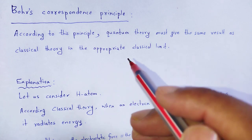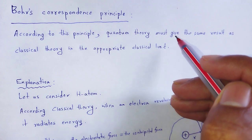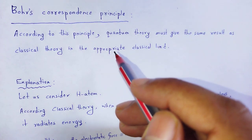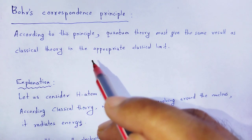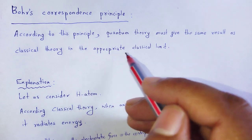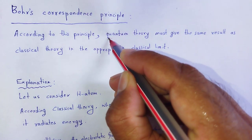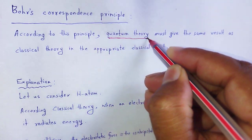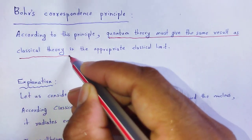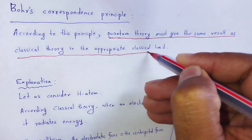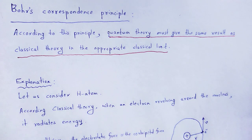According to this principle, quantum theory must give the same result as classical theory, but the condition is that the appropriate classical limit is used. Quantum theory must give the same result as classical theory in the appropriate classical limit.